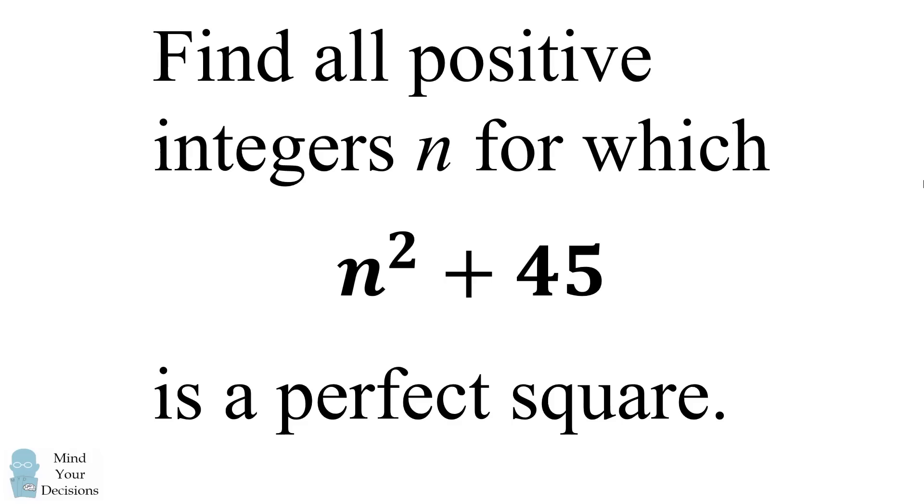Hey, this is Presh Talwalkar. I received this math counts problem by email from Bill. Find all positive integers n for which n squared plus 45 is a perfect square.